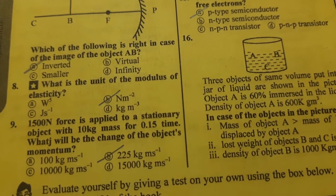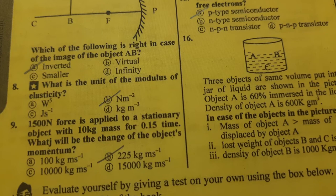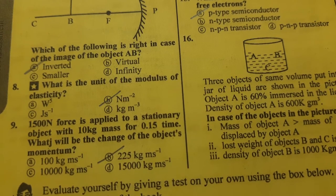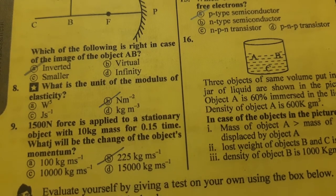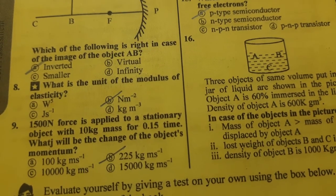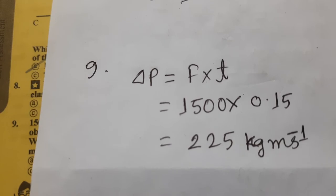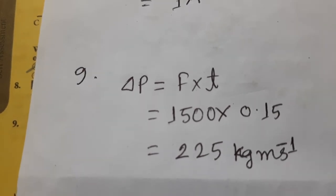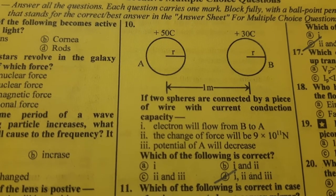Question number nine: a 1500 newton force is applied to a stationary object of 10 kg mass for 0.15 seconds. What will be the change of the object's momentum? The answer is option B — 225 kg·m/s. The explanation is Δp = F × t = 1500 × 0.15 = 225 kg·m/s.